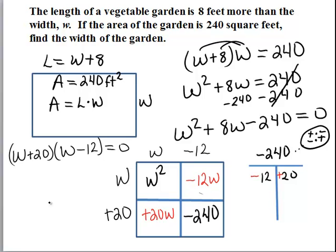So using the zero factor property, we will set w plus 20 equal to 0 and w minus 12 equal to 0. In the first case, we obtain w equals negative 20, and in the second case, we obtain w equals 12.